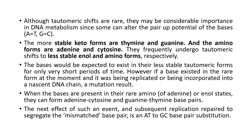Although tautomeric shifts are rare, they may be of considerable importance in DNA metabolism, since some can alter the base-pairing potential of the bases. Usually adenine pairs with thymine and guanine pairs with cytosine. The more stable keto forms are thymine and guanine, and the amino forms are adenine and cytosine. They frequently undergo tautomeric shifts to less stable enol and imino forms respectively, and the bases would be expected to exist in these less stable tautomeric forms for only very short periods of time.